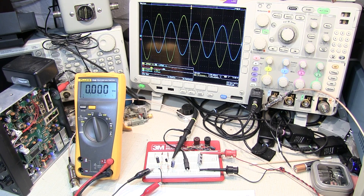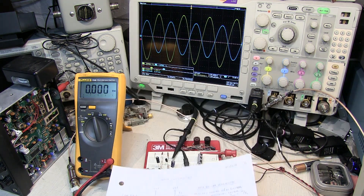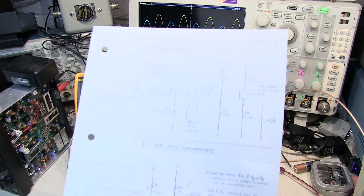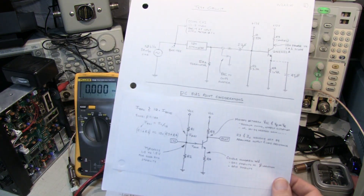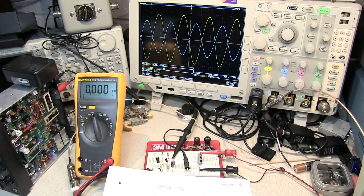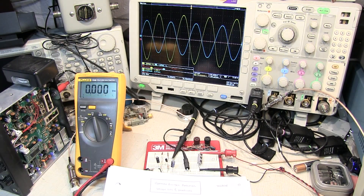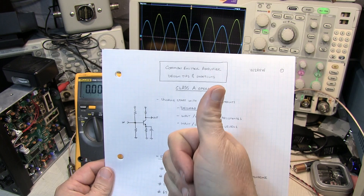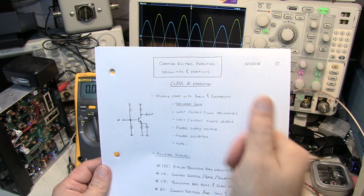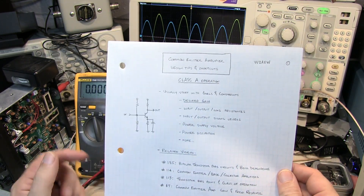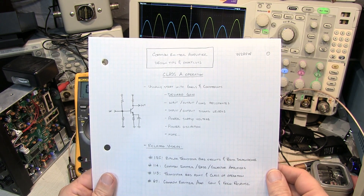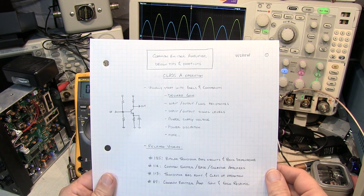I hope this video has given you some insight into shortcuts for gain calculation and tips for setting up bias conditions for a common emitter class A amplifier. If you like the video please give me a thumbs up, list any comments or questions below, and thanks for watching — we'll see you next time.